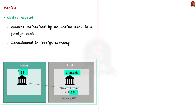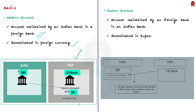First, the Nostro account. Nostro in Latin means 'our'. A Nostro account refers to an account maintained by an Indian bank in a foreign bank located in a foreign country, and it is maintained in the foreign currency. For example, SBI maintains a US dollar-denominated account in Citibank located in the USA — this is a Nostro account. So basically, Nostro account means our money that is on deposit at your bank. The reverse of this is the Vostro account. Vostro in Latin means 'your'. In case of a Vostro account, a foreign bank maintains an account in an Indian bank, denominated in Indian rupees — your money is on deposit at our bank.